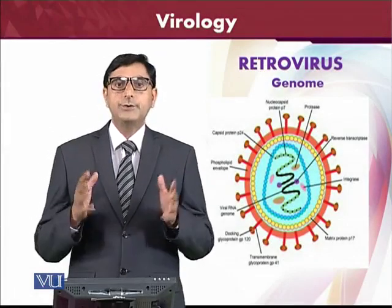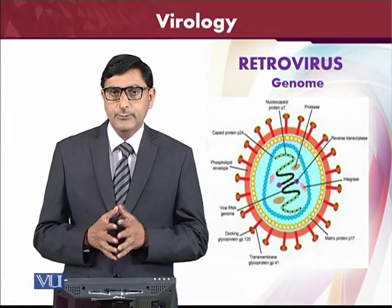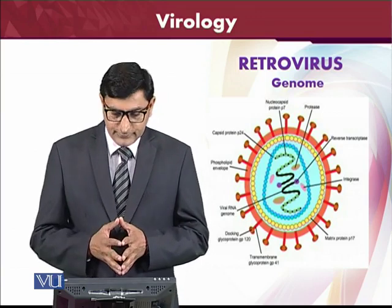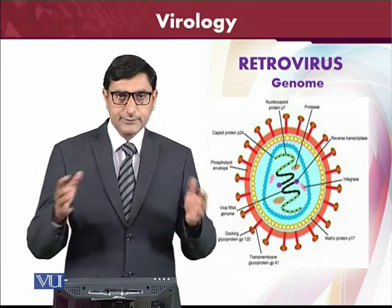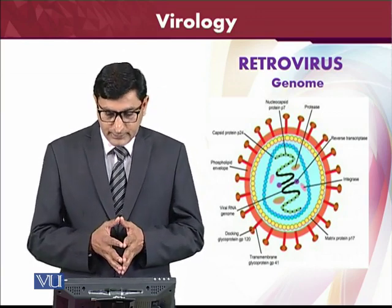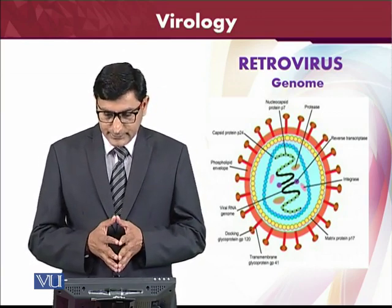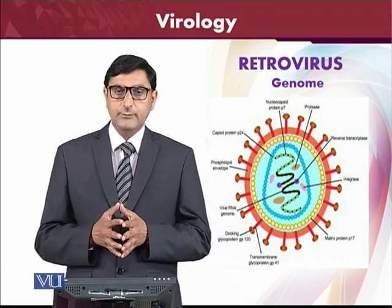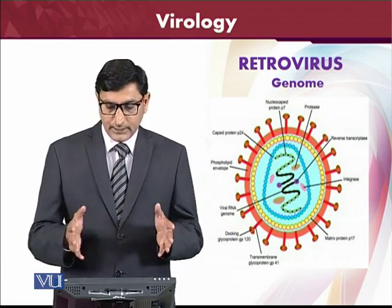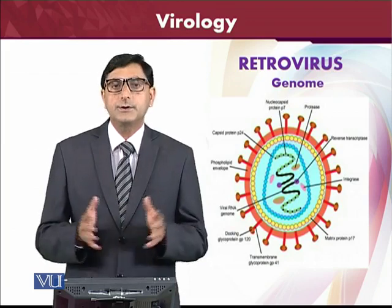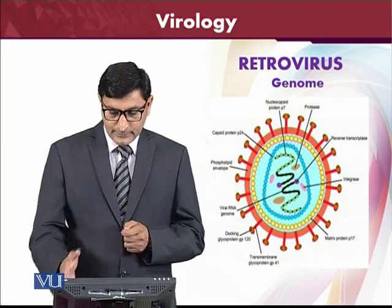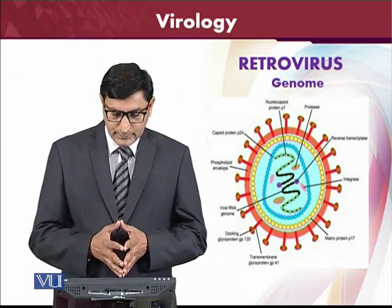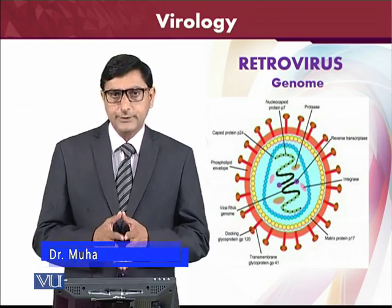Now let's look at the retrovirus genome — how it looks and what its basic ingredients are. From the figure in front of you, the basic components inside the retrovirus are clear. Most importantly, the reverse transcriptase enzyme is already there along with the RNA, the nucleic acid material. The integrase enzyme is also present because the virus has to integrate with the host system. The matrix proteins make up the capsid.